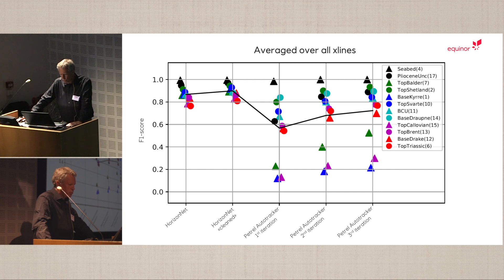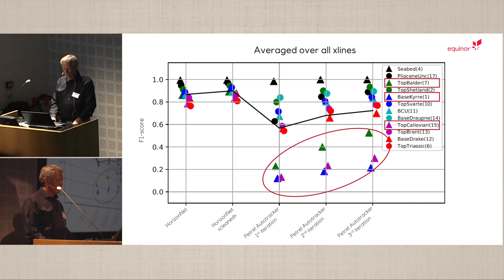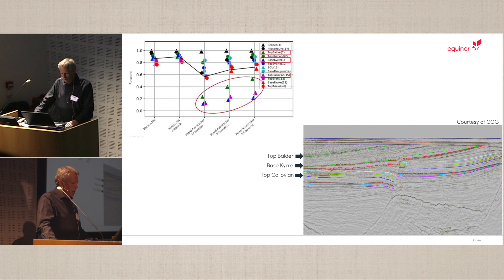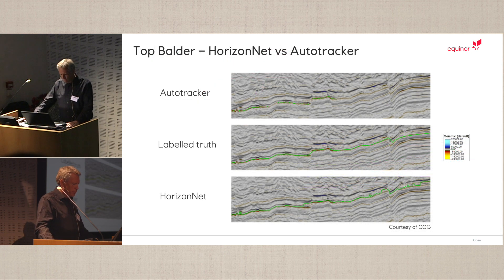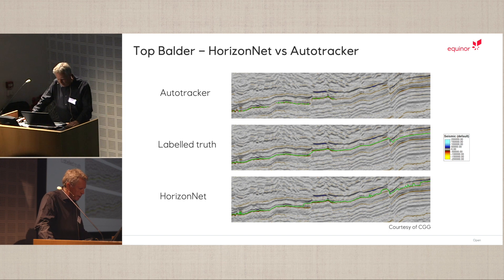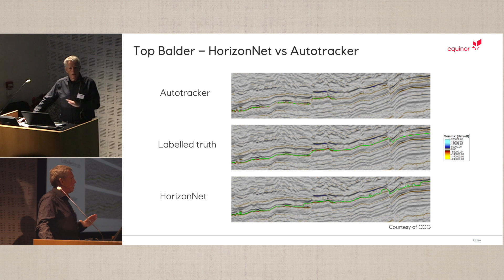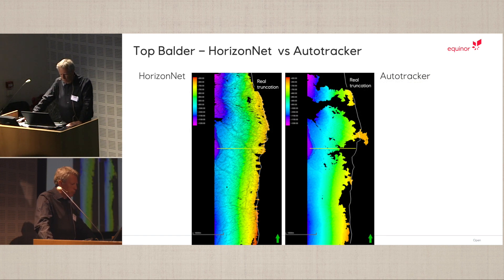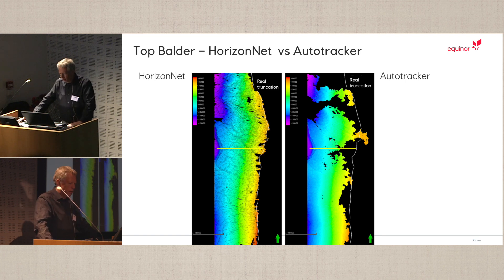The auto-tracker performs almost just as well for most key horizons, apart from three circled horizons: Top Alder, Base Shida, and Top Columbian. For Top Alder, there is a phase shift, and you can see the auto-tracker is struggling while HorizonNet in most cases does not. The map surface of Top Alder also shows how nicely HorizonNet terminates the surface at the truncation line and doesn't continue on the unconformity, showing a lot more detailed and nicer structure.